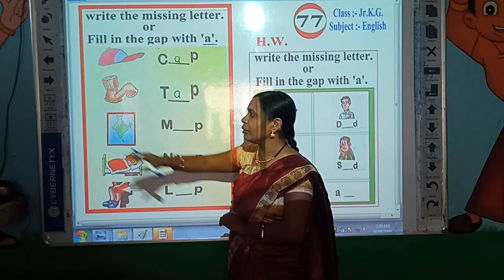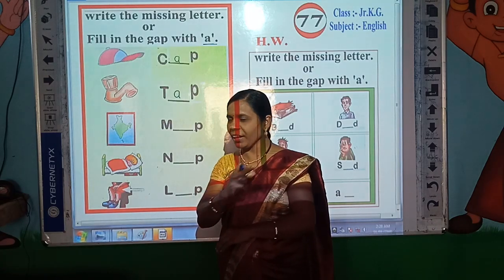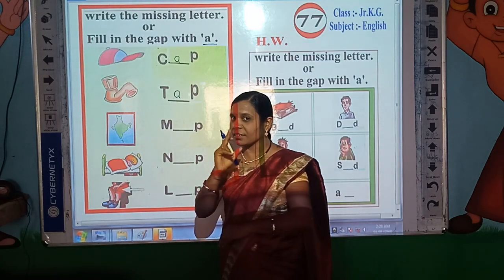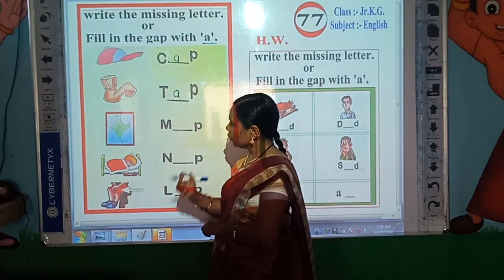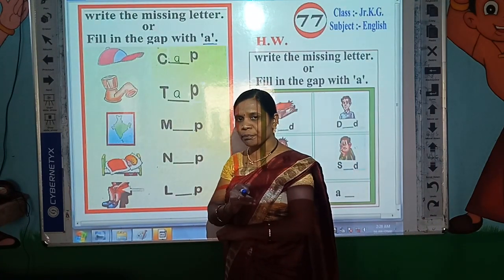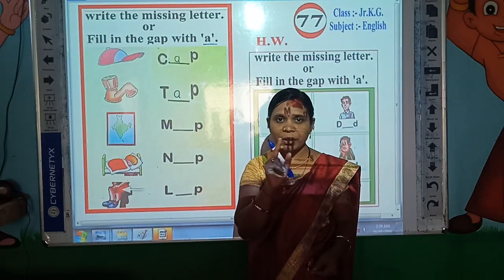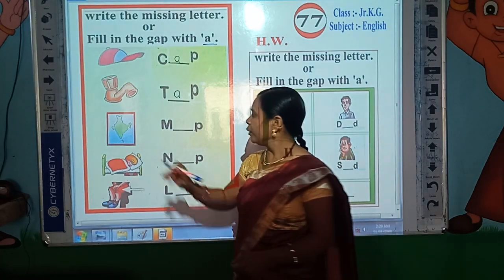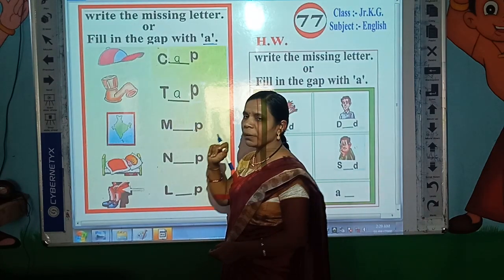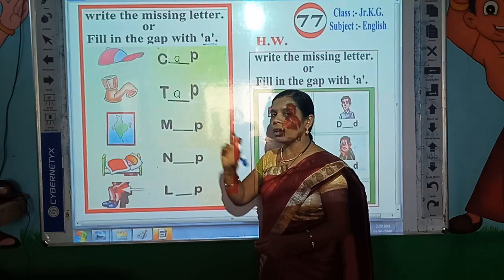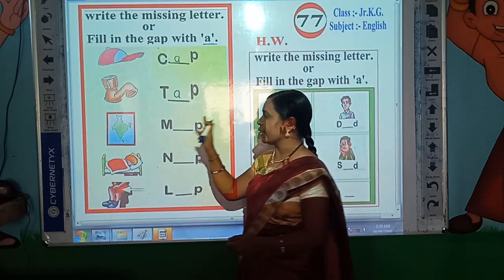Now look here — which picture is this? You know very well. This is the picture of man. Now read the spelling of man: M-A-N, man. Now look here: M-N. Here also, A is the missing letter, so write A here.